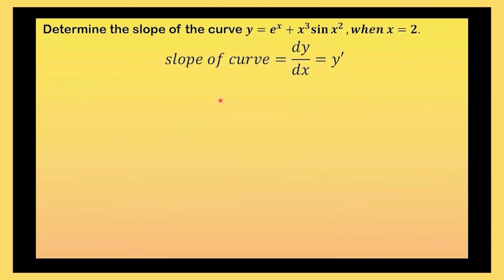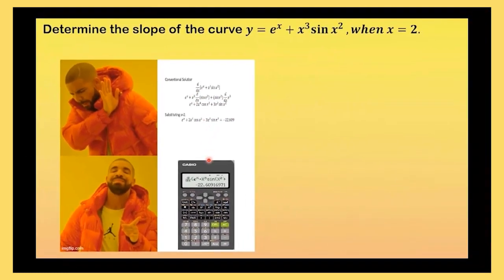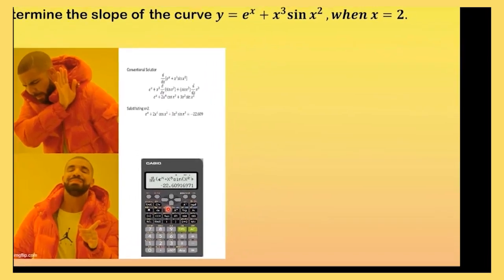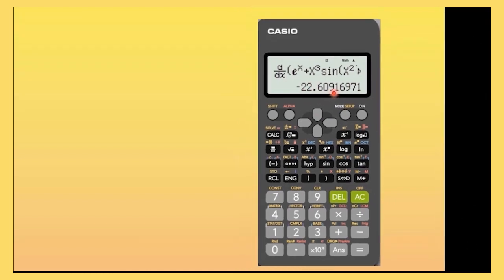Most of the students will not perform the conventional. Why? Because the calculator can perform differentiation. So if you want to do the conventional solution, it's like this. And if you do the calculator, you just press like this one. You just type and then press equals. The answer instantly pops out negative 22.609 in this case.